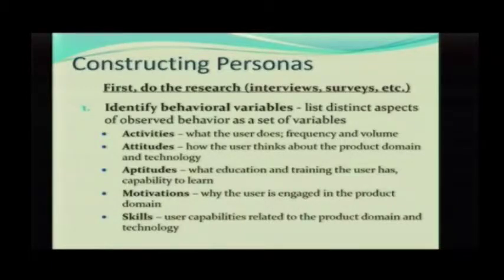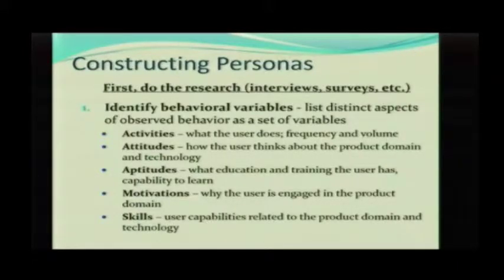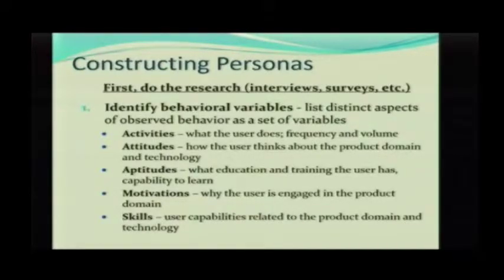You want to categorize it into a number of different types of things. Activities: what does the user do, how often do they do it, how much time do they spend doing it? Attitudes: what does the user think about the product domain, and what do they think about technology — whether in that domain or technology in general? Aptitudes: what do they know how to do, what's their education, what training does this user have in that particular domain?